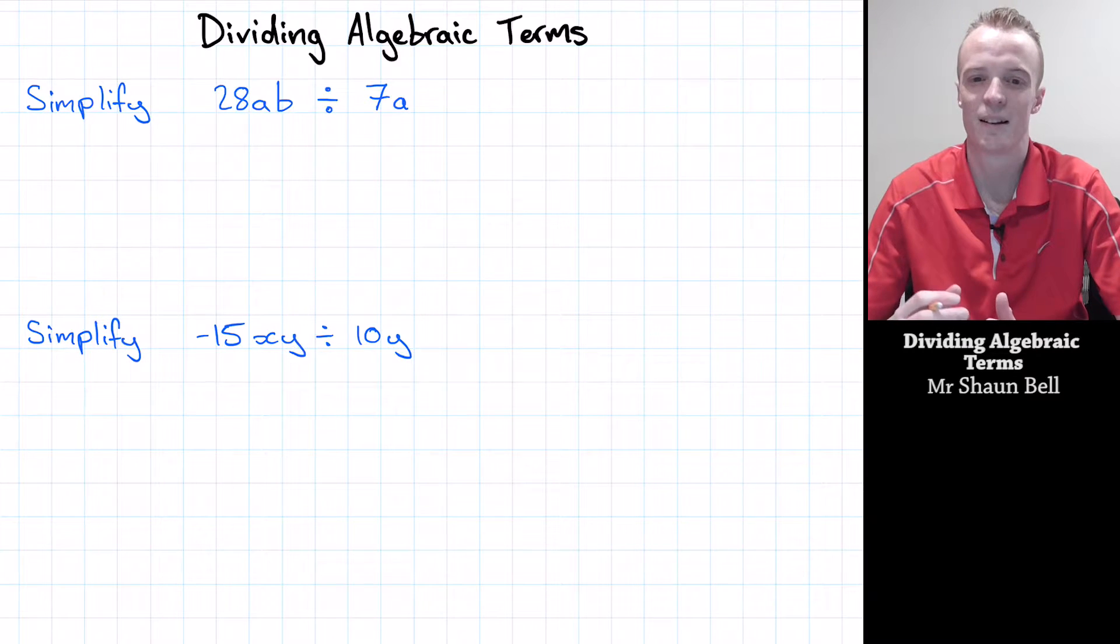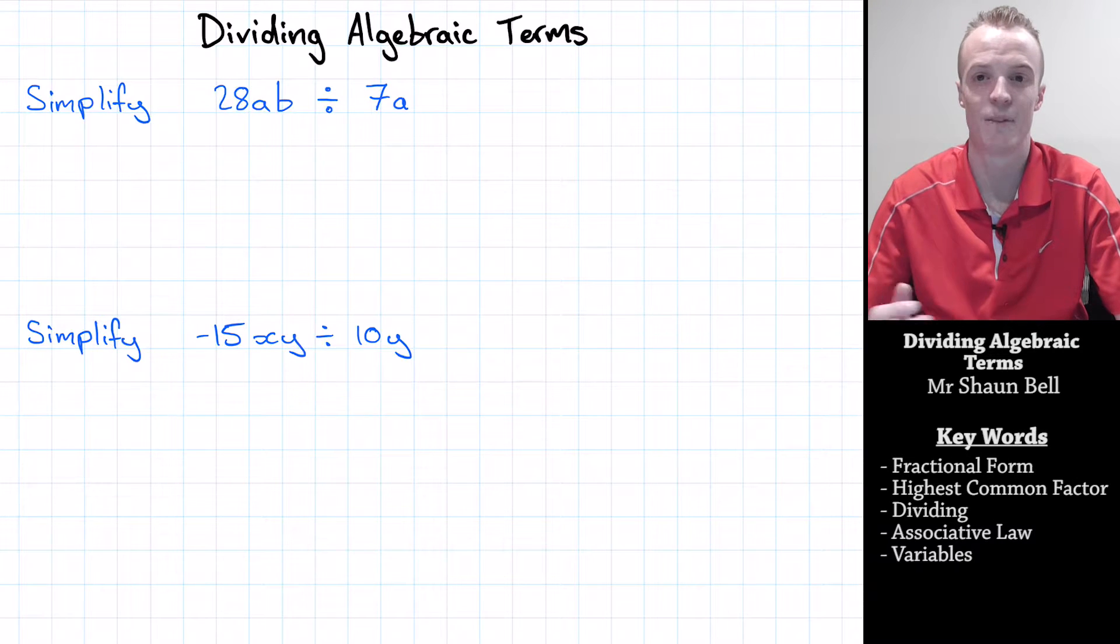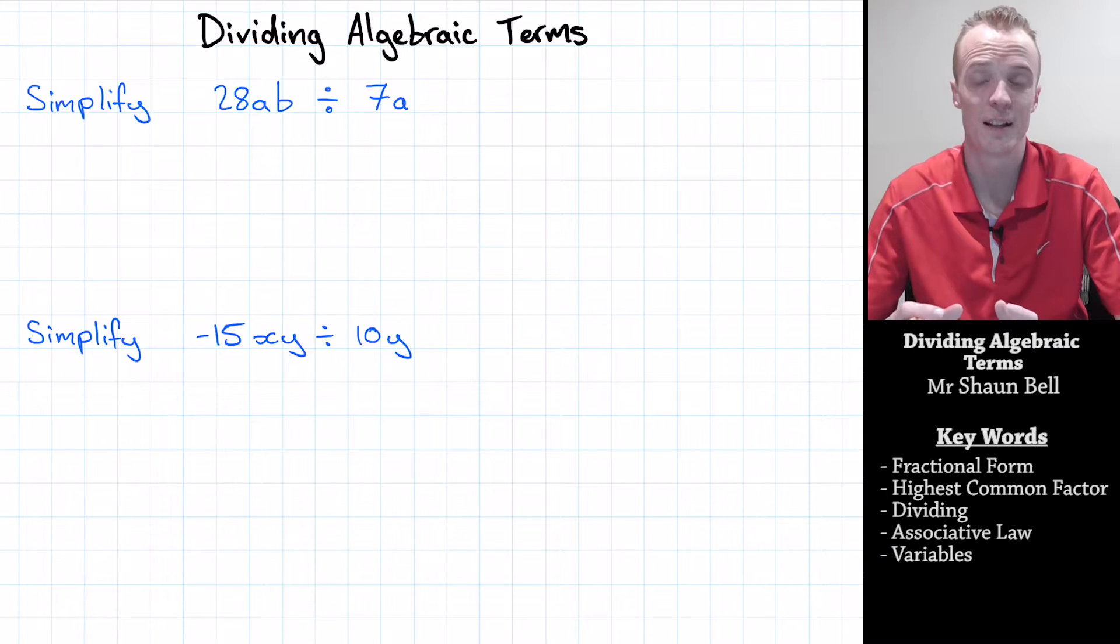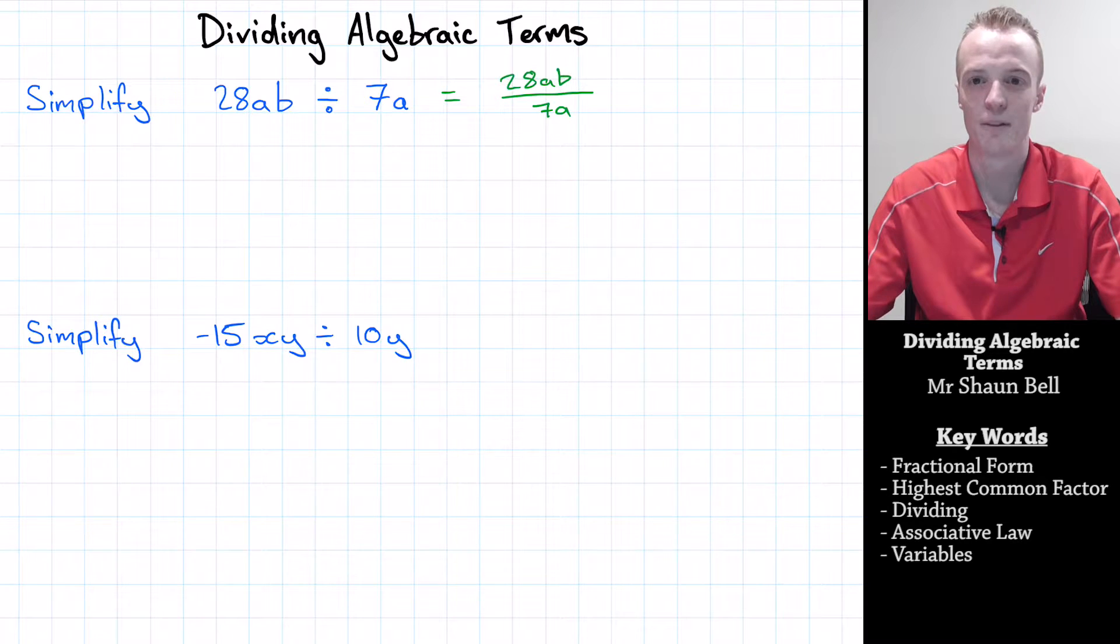I want to start today by considering the expression 28ab divided by 7a. Now when we're dividing algebraic terms, the first thing that we need to do is represent that division in fractional form. So we represent this problem as 28ab over 7a, and that's now represented in fractional form.